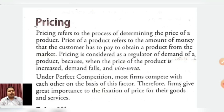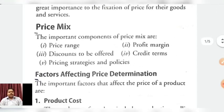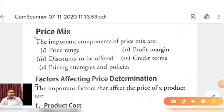When we talk about perfect competition, most firms compete with each other on the basis of price. In a market with a large number of buyers and sellers, price is the key factor determining demand and supply and the purchasing power of the customer. The components of price mix include price range, profit margin, discount to be offered, credit terms, and price strategies and policies.